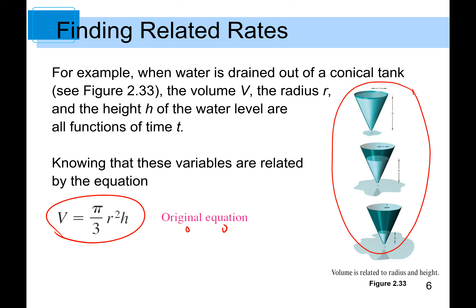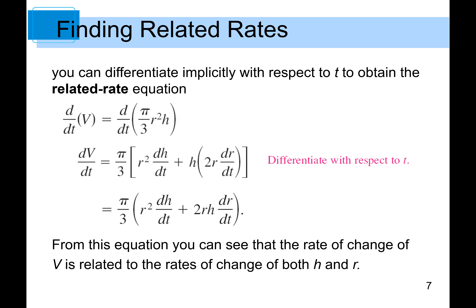Knowing these variables are related by the equation V = (π/3)R²H, you can differentiate implicitly with respect to t to obtain a related rate equation. So basically we take that equation and differentiate everything with respect to time t, getting dV/dt on the left side. We then apply the product rule to the right side where F = R² and G = H.